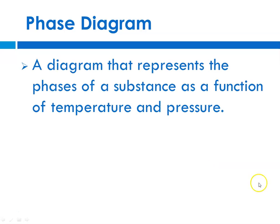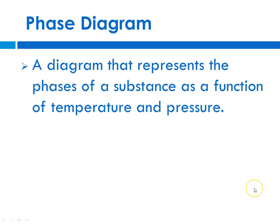So what is a phase diagram? It's a diagram that represents the phases of a substance as a function of temperature and pressure. And typically, temperature is on the x-axis and pressure is on the y-axis.